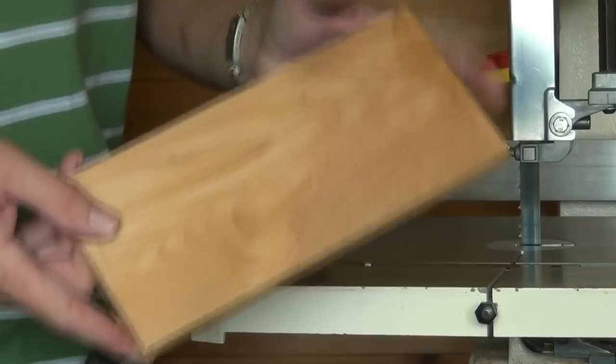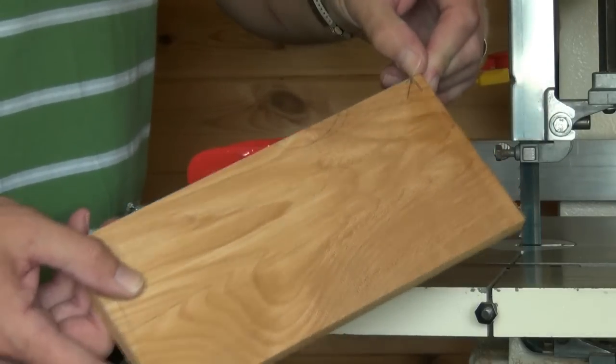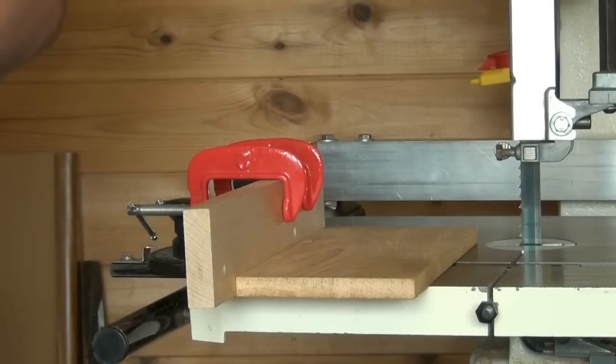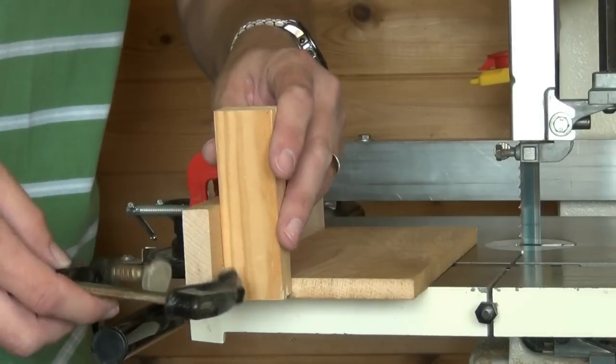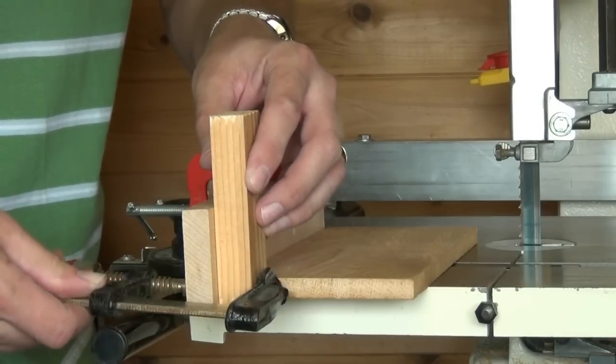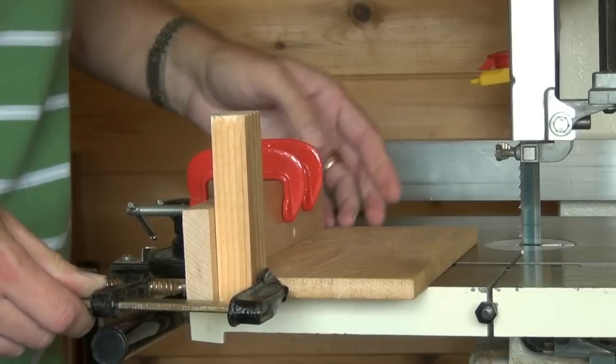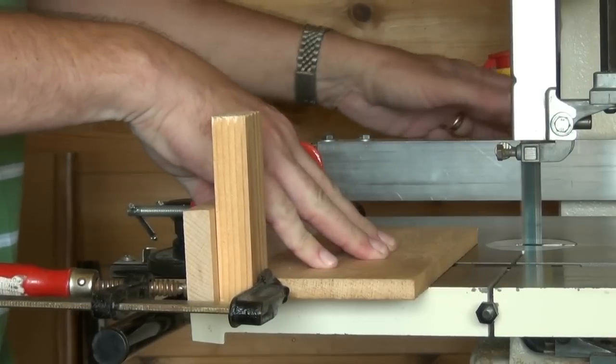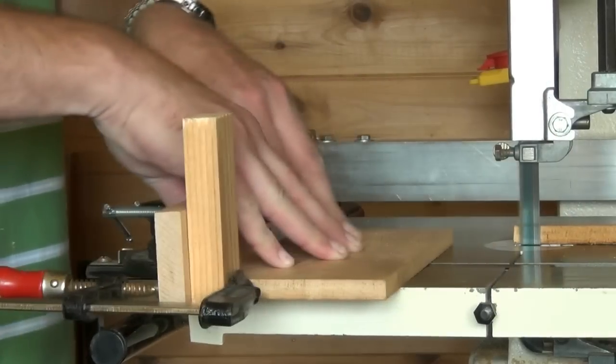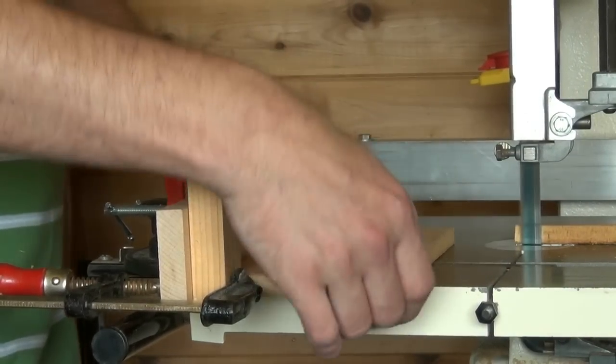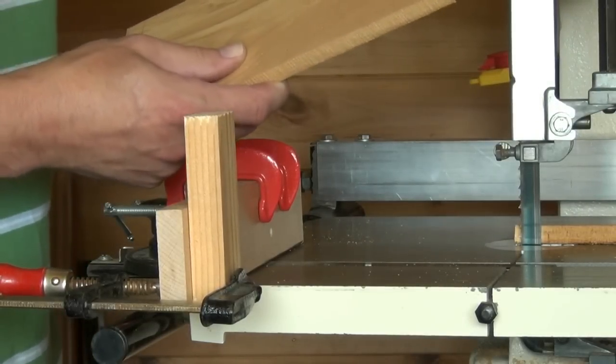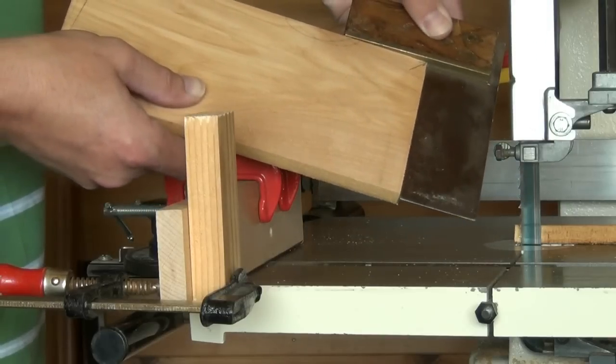To cross-cut our piece of work to this exact line here, place that line right at the end of the fence, add a stop block at the end to prevent it moving, and then we can cut. And we have a perfect cut just at the angle we were looking for.